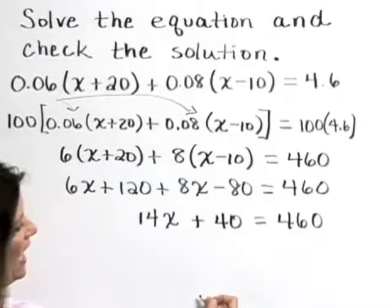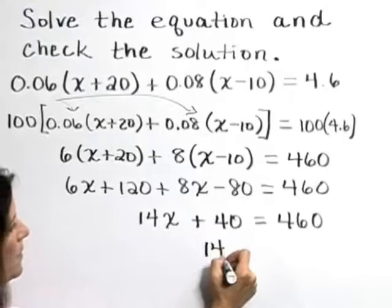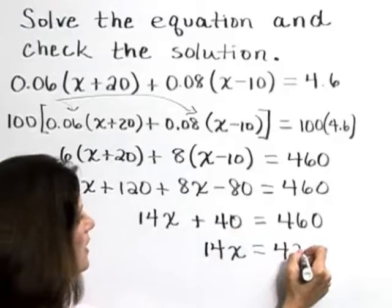Now, using our addition property of equality, subtracting 40 from both sides leaves 14x on the left. 460 minus 40 is 420.